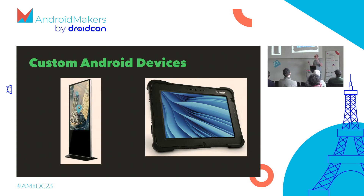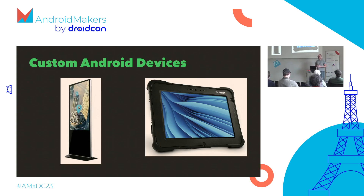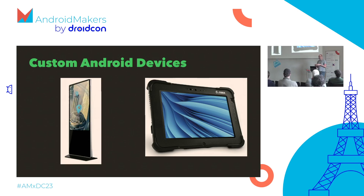In the automotive space we're getting Android devices running there. Android Automotive is the official Google thing, but there's also Android Automotive as a custom version without the Google stuff, and sometimes there's a screen and sometimes there's not. Then finally there are home appliances — ovens, microwaves, fridges, freezers, washing machines, dishwashers, etc. — all starting to run Android on high-end devices. And there's a bunch of other areas in robotics and industrial applications as well.